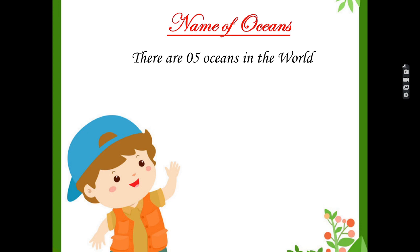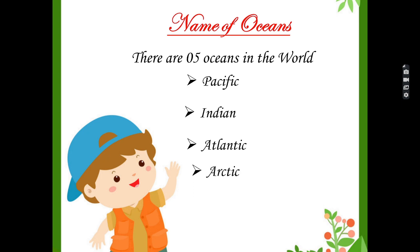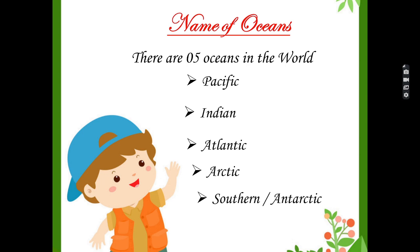How many oceans are there in the world? There are 5 oceans in the world: Number 1 Pacific Ocean, Number 2 Indian Ocean, Number 3 Atlantic Ocean, Number 4 Arctic Ocean, Number 5 Southern Ocean.